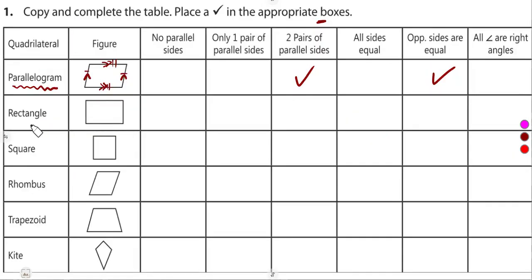We have no parallel sides. Then, moving on to a rectangle. We know that the opposite sides are also parallel and equal. So we cannot have no parallel side, only one pair. No, this is two. Just like, remember, a rectangle is under a parallelogram.